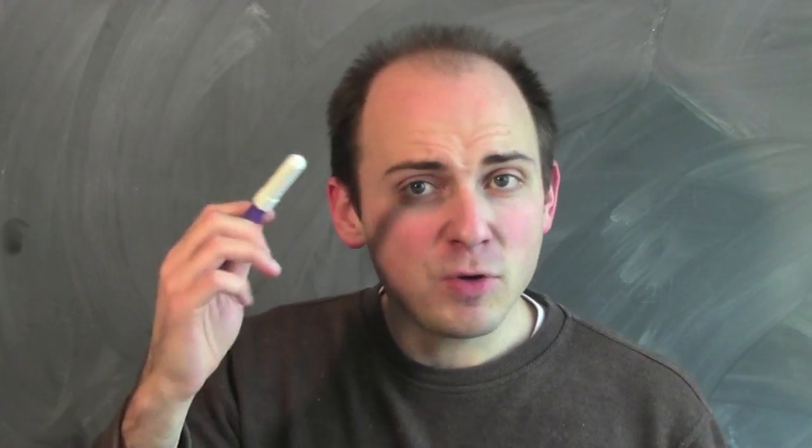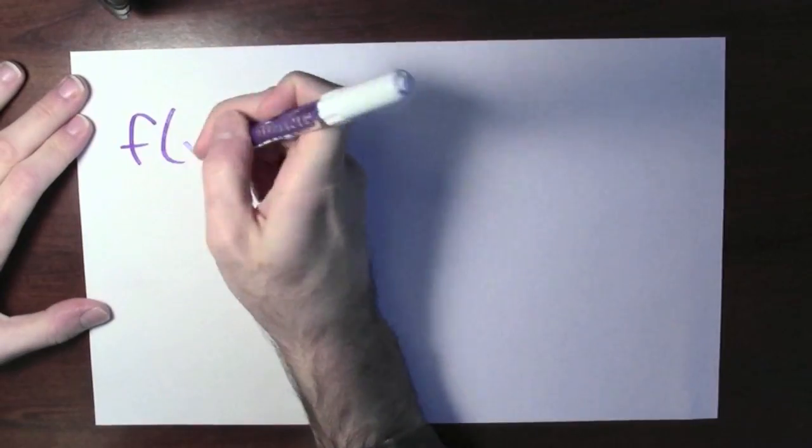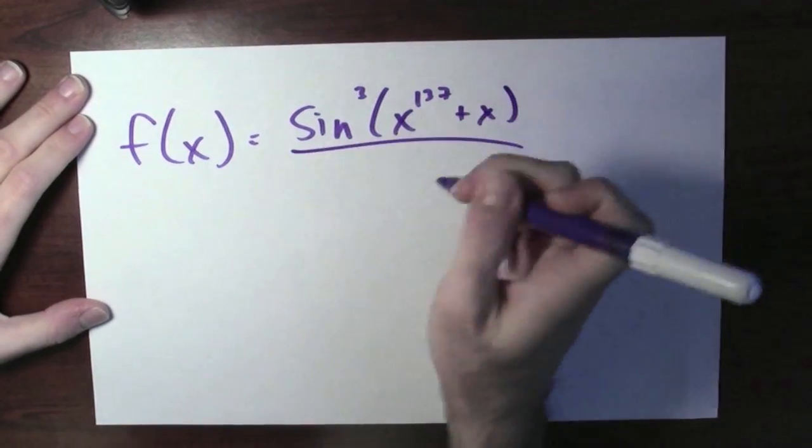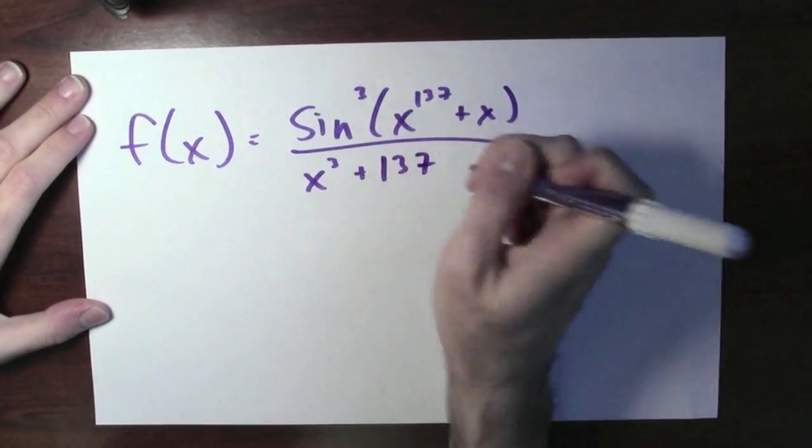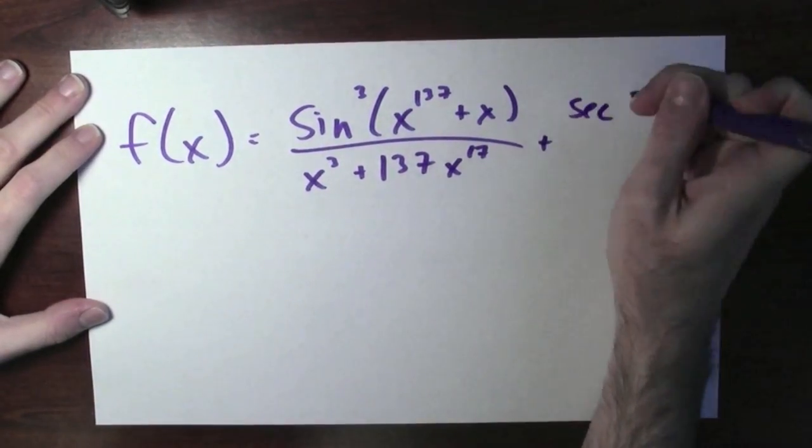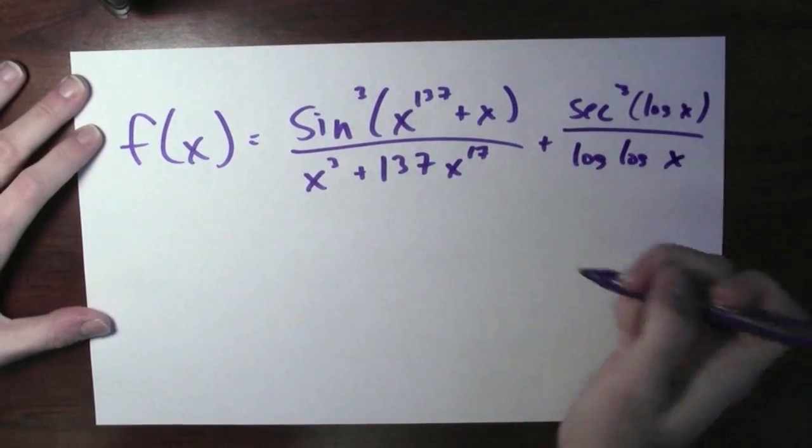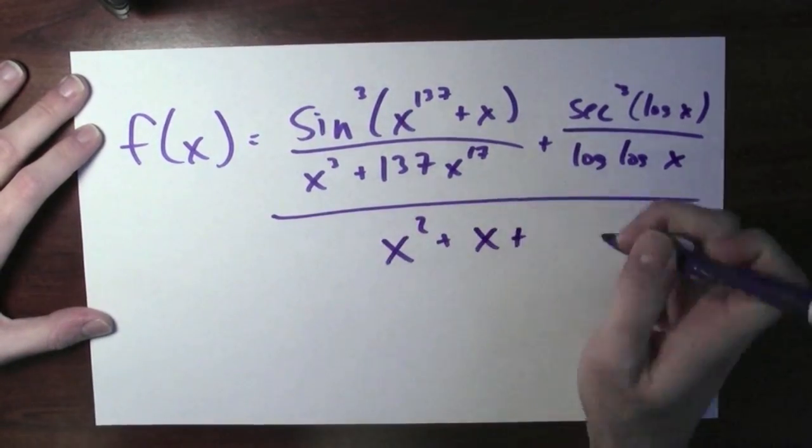In light of this, I'd encourage you just to pick up your pen and write down some extraordinarily complicated functions. The function that you write down has probably never been written down in the history of humankind. There's just so many different choices that you could make when you're combining all these different algebraic operations. And that's part of what makes calculus so amazing - there's just a huge variety of functions out there.